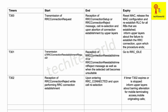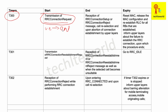The first timer is T300. T300 starts at the transmission of RRC Connection Request. The UE sends this RRC Connection Request message to the eNodeB, and when this transmission happens, the timer T300 starts.